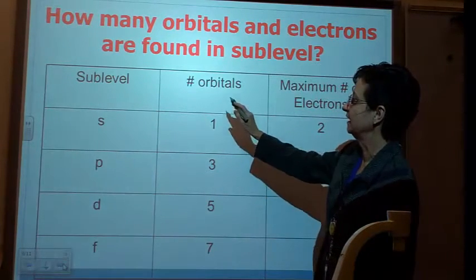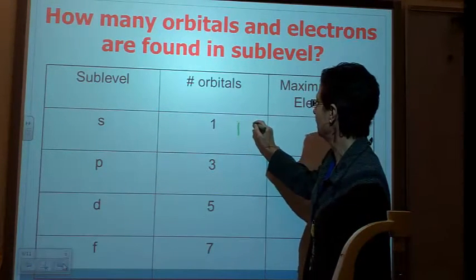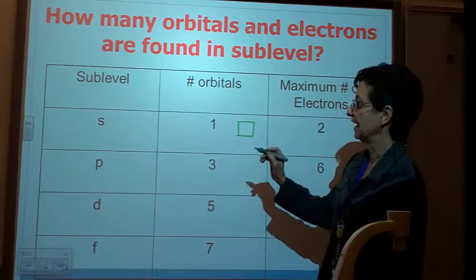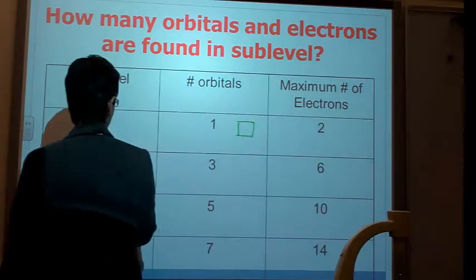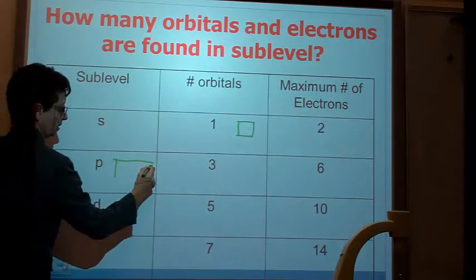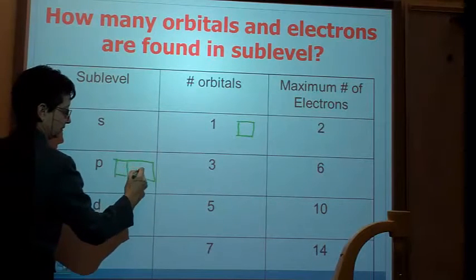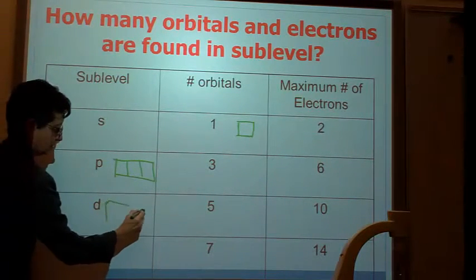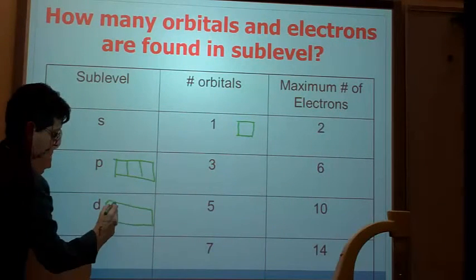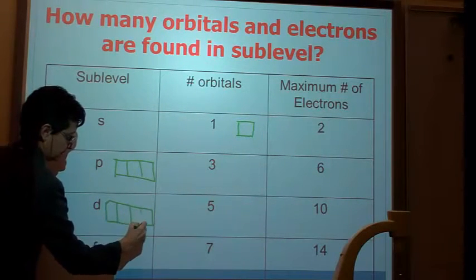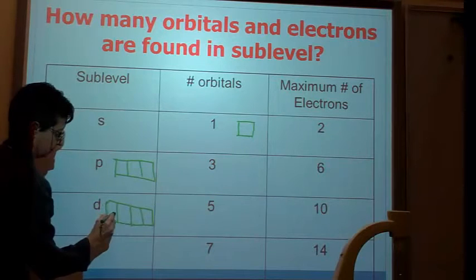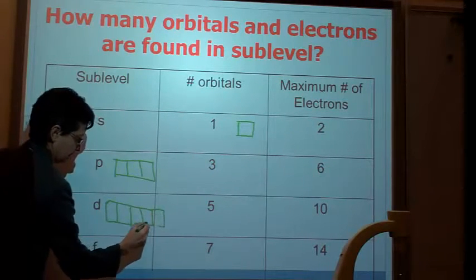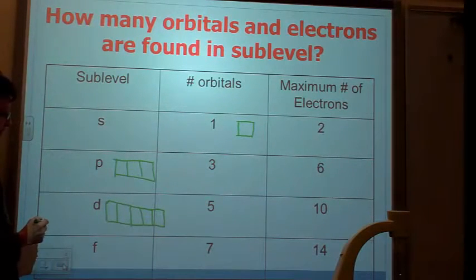And we said that there was one box only for the S. Okay? There's three boxes for the P. And there are five boxes. Okay? I'm kind of short here. Okay? Five boxes for the D.